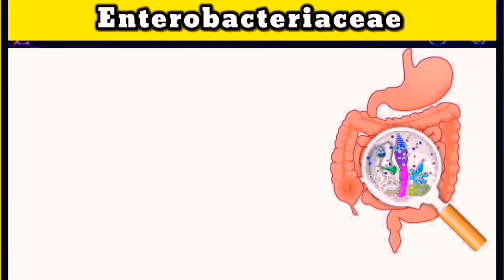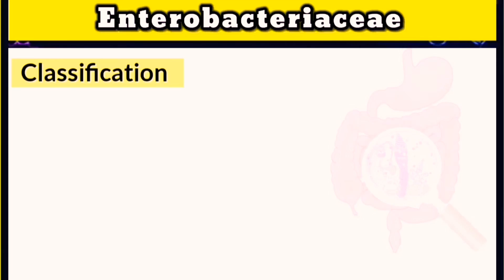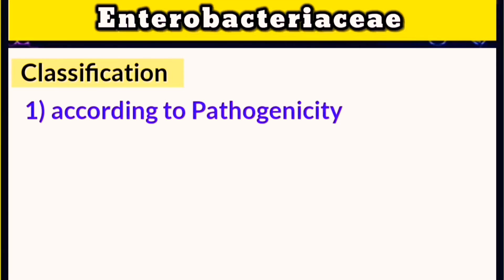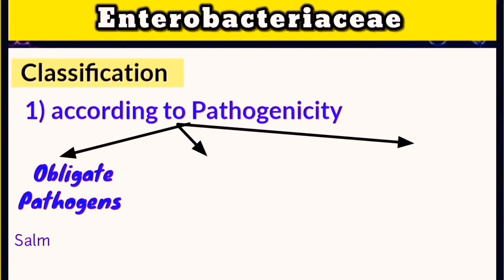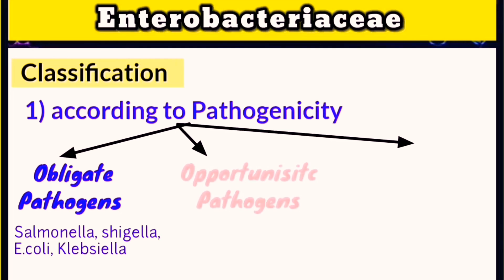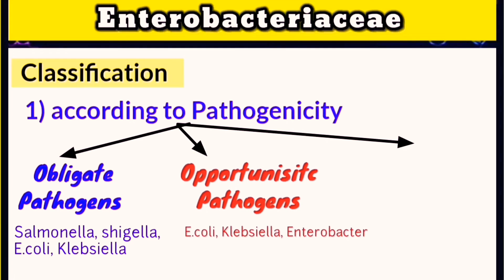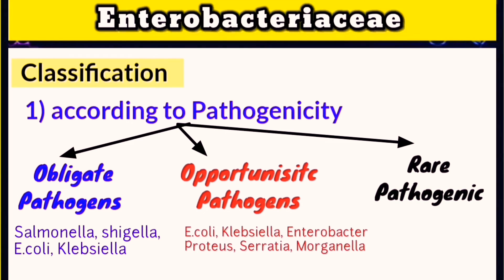Enterobacteriaceae are classified according to their pathogenicity as obligate pathogens — such as Salmonella, Shigella, some E. coli, and Klebsiella — opportunistic pathogens like E. coli, Klebsiella, Enterobacter, Proteus, Serratia, and Morganella, or non-pathogenic organisms like Citrobacter or Hafnia.